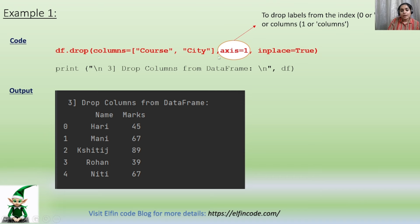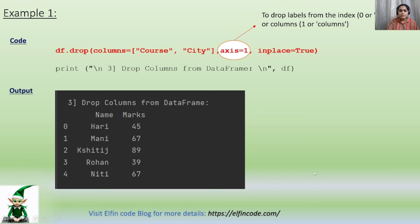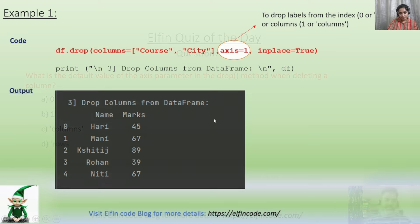The axis parameter can have a value of zero or one. One basically represents columns, and zero represents the rows or indexes. And inplace=True means we are performing all these operations in place. So using df.drop(), we can drop the columns from the DataFrame.